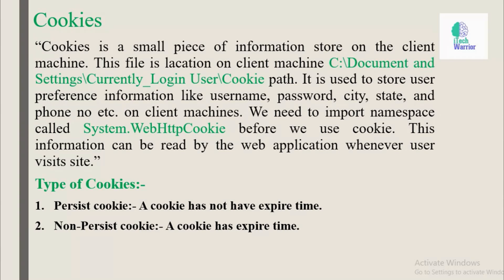We need to import a namespace called System.Web.HttpCookies before we use a cookie. This information can be read by the web application whenever the user visits the site. There are two types of cookies: first is a persistent cookie — a cookie that does not have an expiry time; second is a non-persistent cookie — a cookie that has an expiry time.